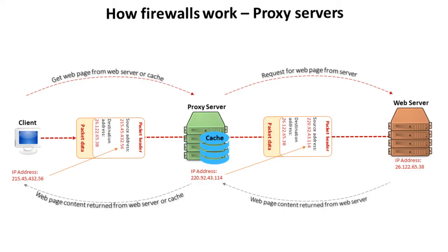The proxy would, for example, pick up all requests for a web page. If the web page is not on its banned list it would pass on the request. On return it could look at the web page and its contents and choose to pass it back to the user or not. In this way a proxy makes sure there is no direct physical connection between a single user and a remote source.